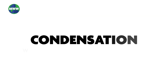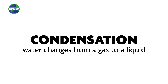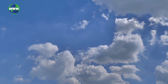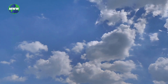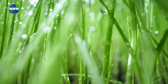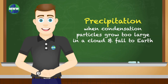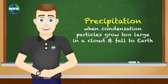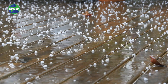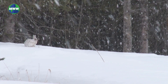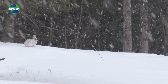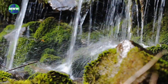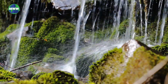As water changes from a gas to a liquid, it undergoes condensation. Condensation can be seen by the formation of clouds or the dew on grass in the morning. When condensation particles grow too large in a cloud and fall to the Earth, it creates precipitation — either rain, hail, sleet, or snow. Precipitation is the most important contributor of fresh water on the planet.